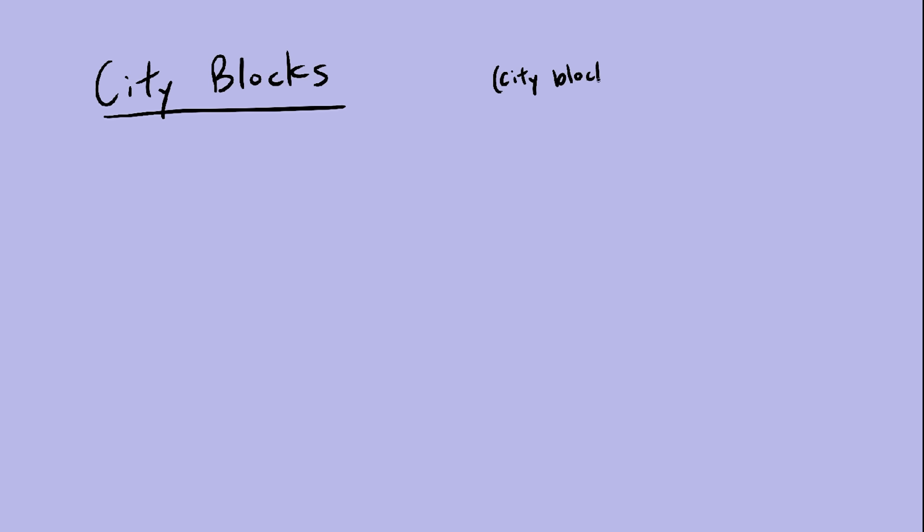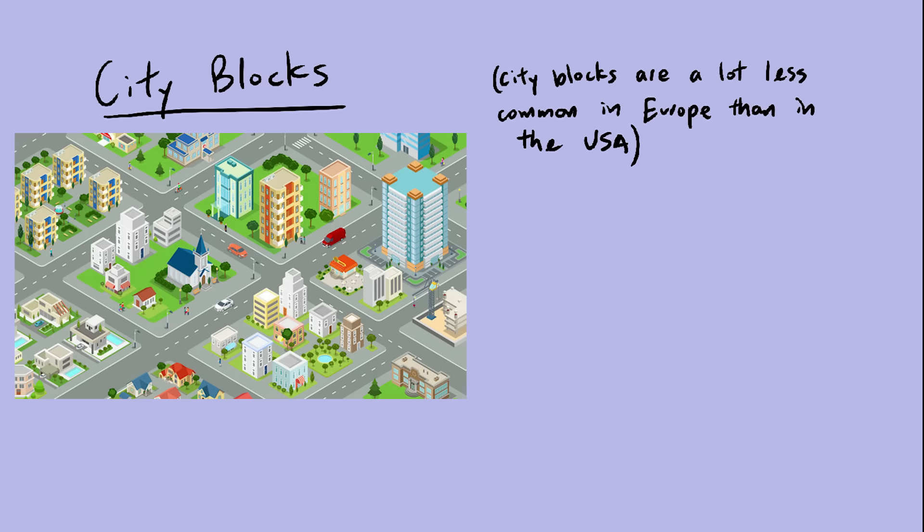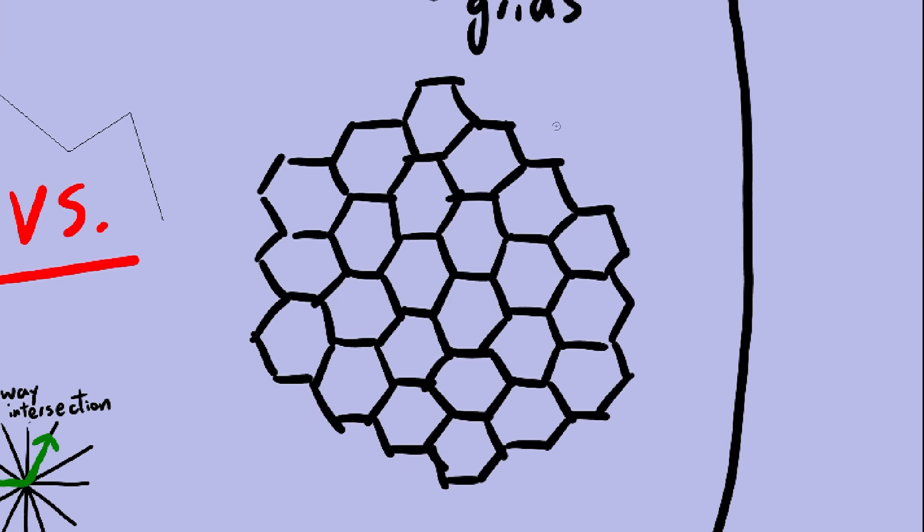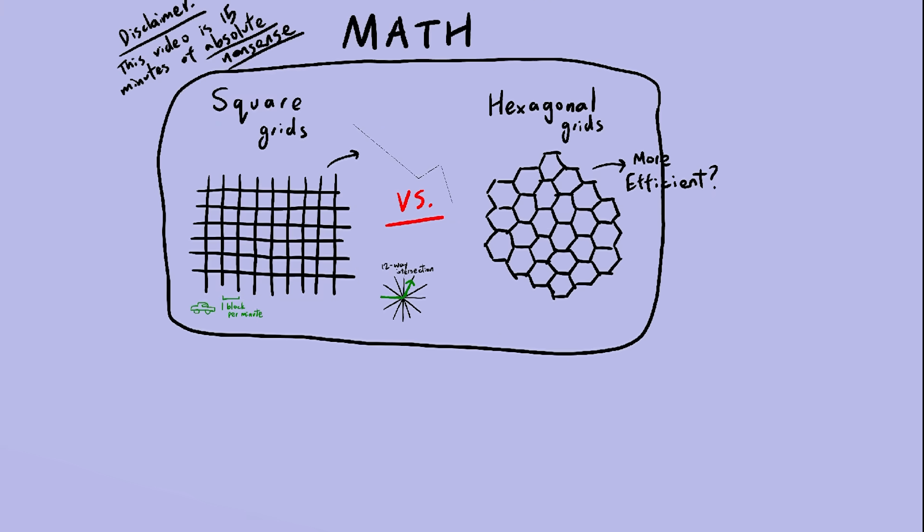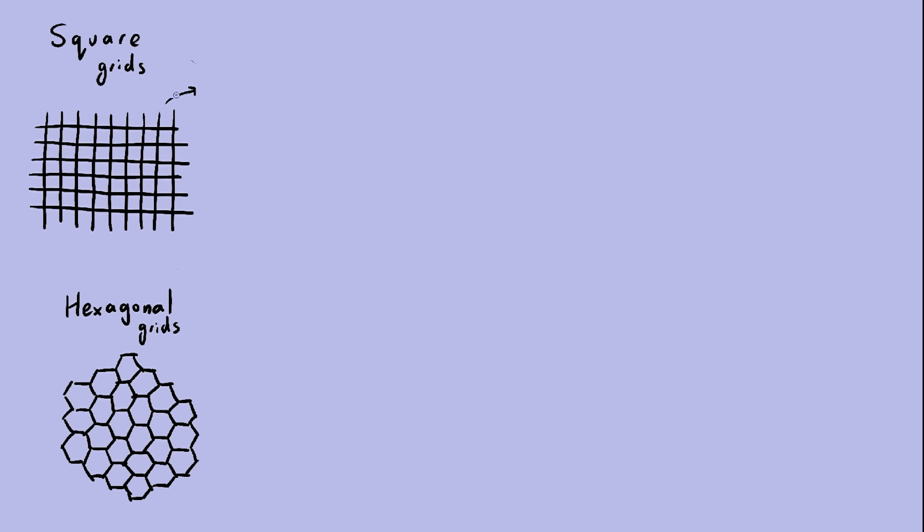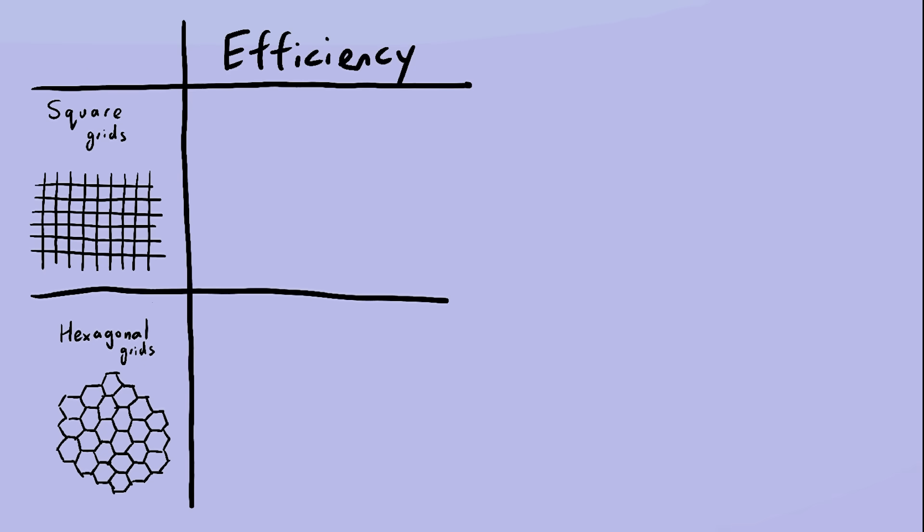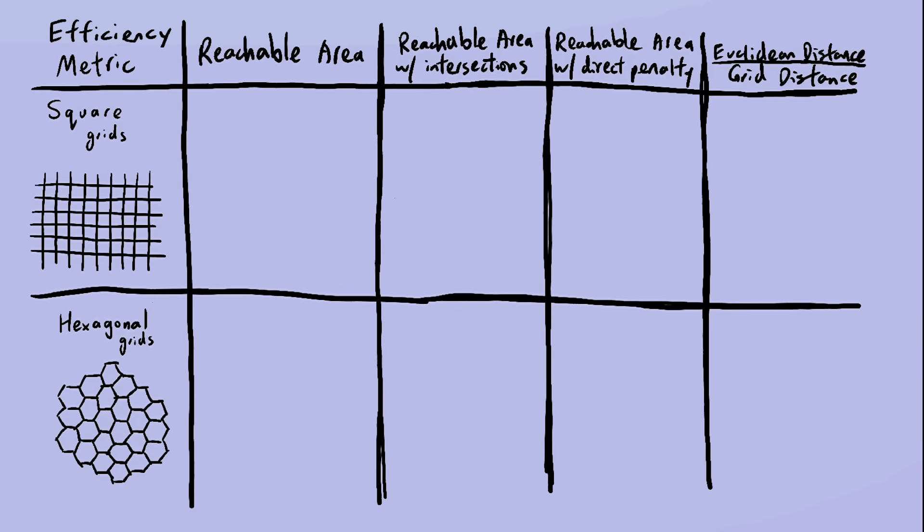Some background first, in case you're from a place that doesn't have city blocks. The road layout of cities sometimes looks like this, a square grid. And the big question we're trying to answer is, would a hexagonal grid be more efficient for transportation? To answer this question objectively, we need some sort of way to measure the efficiency of each grid. How good is it at transporting people around? There are, of course, many ways to measure efficiency, but for now let's use this.